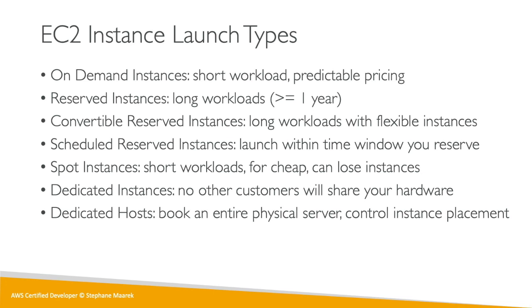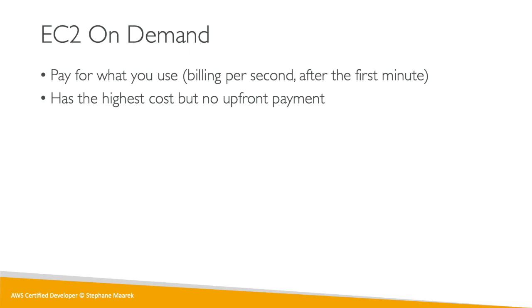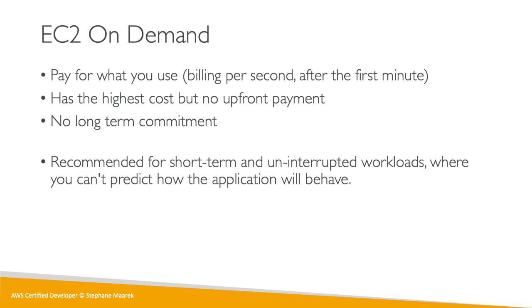For on-demand, it's what we've been doing — we pay for what we use. When we launch an instance, we're billed per second after the first minute. It has the highest cost but there's no upfront payment and no long-term commitment. We can start the instance whenever we want. It's recommended for short-term, uninterrupted workloads where we can't predict how the application will behave — on-demand is great for auto scaling, for example.